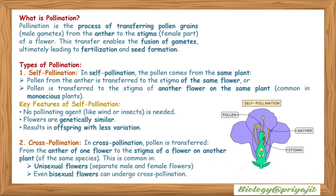Pollination is the process of transferring pollen grains — or male gametes — from the anther to the stigma of a flower. This enables the fusion of gametes, ultimately leading to fertilization and seed formation. Pollination is basically of two types: self-pollination and cross-pollination.